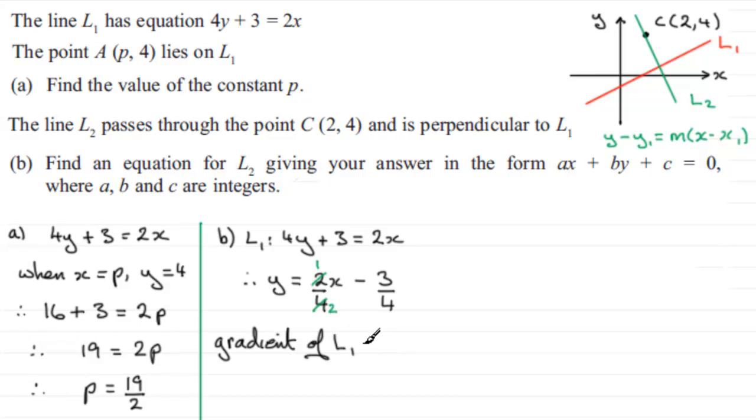Let's just write it in. Gradient of L1 is going to be equal to a half. It's the M value in the Y equals MX plus C. And the perpendicular gradient rule tells us that the gradient of L2, remember that the product of the gradients should come to minus 1. So what it means is that you just need to reciprocate this, turn it upside down and swap the sign. So if I turn it upside down it's going to be 2 over 1 or just simply 2. Swap the sign and it's going to be a minus.